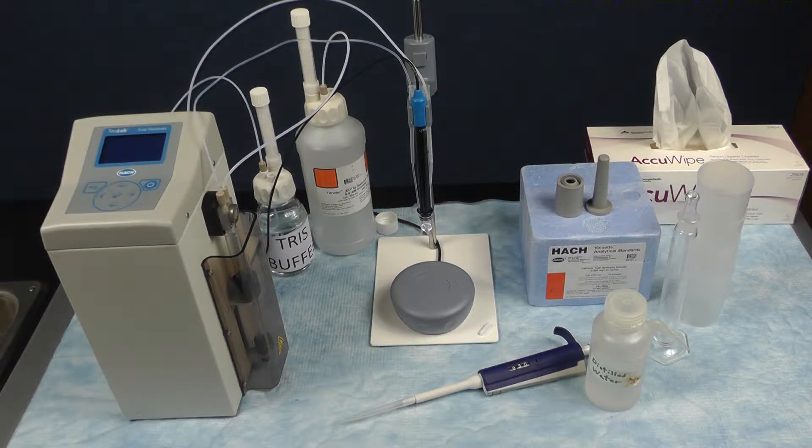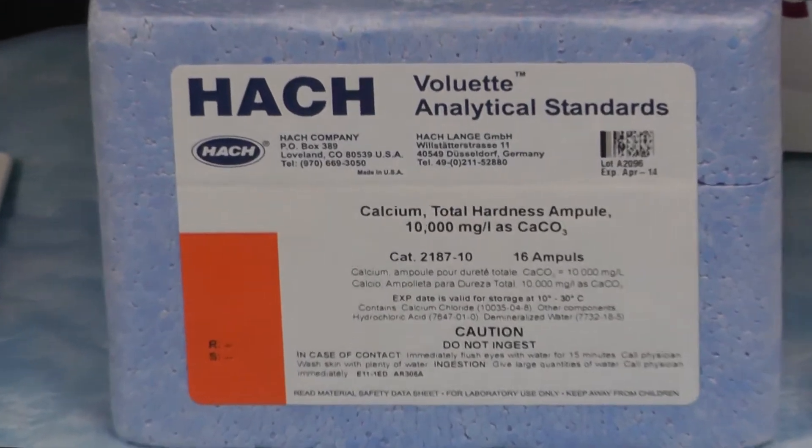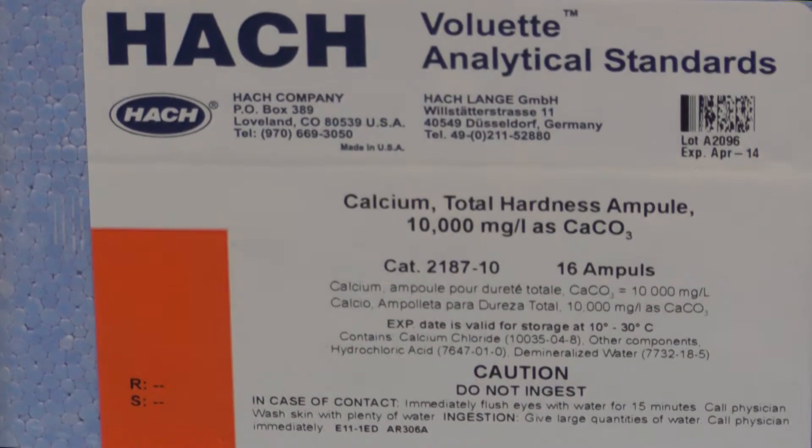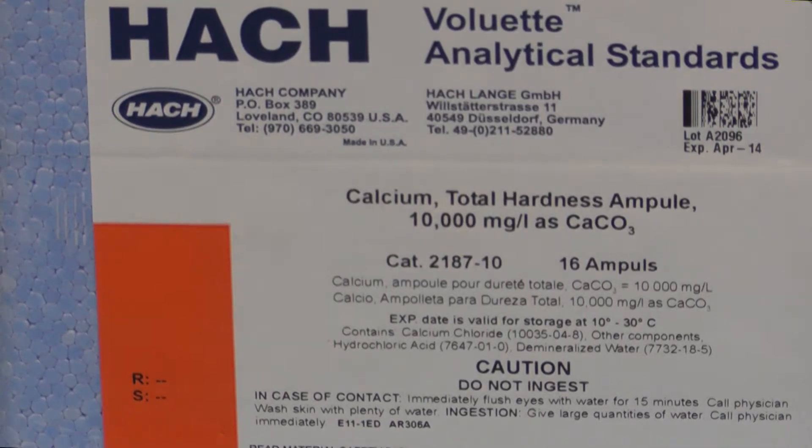You should already have all the components of the instrument assembled and reagents for the analysis as described in the manual. You will need the following additional reagents and labware to perform the analysis. We will perform the analysis using the Hach TitraLab for total hardness and a Hach standard of 10,000 milligrams per liter hardness as CaCO3.